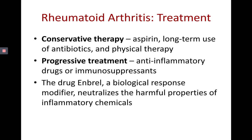Therapies for rheumatoid arthritis include conservative options — aspirin, long-term antibiotics, and physical therapy — as well as progressive treatments using anti-inflammatory drugs or immunosuppressants, though immunosuppression carries risk of increased susceptibility to bacterial infections. The drug Enbrel is a biological response modifier used in progressive treatment that neutralizes harmful inflammatory chemicals.